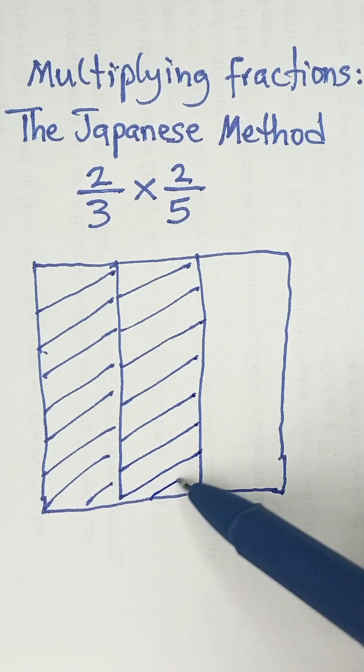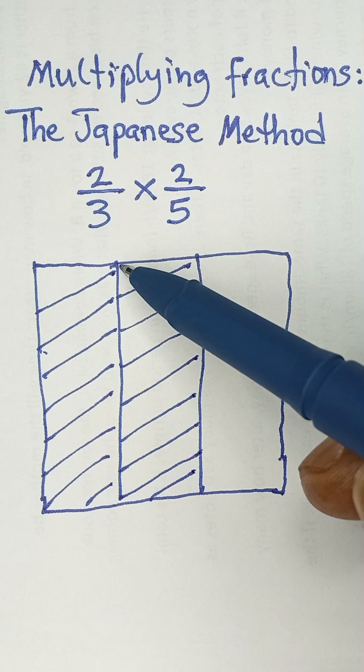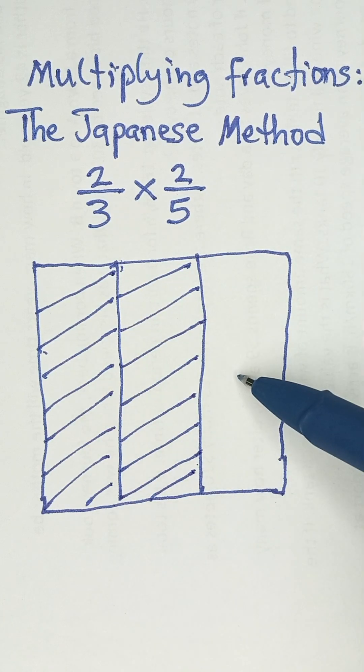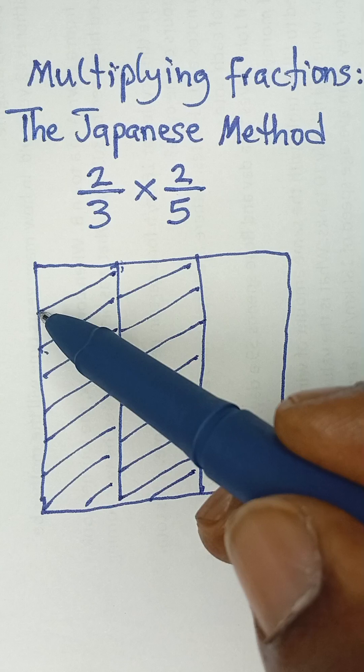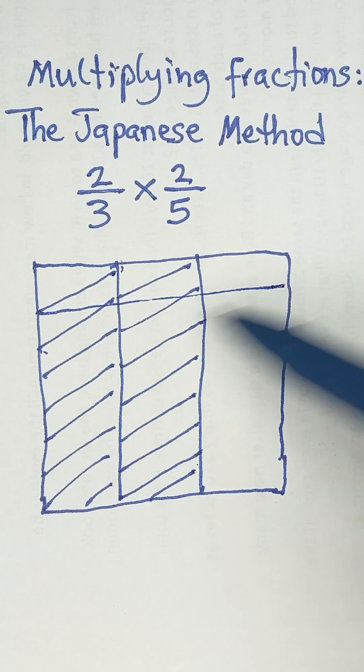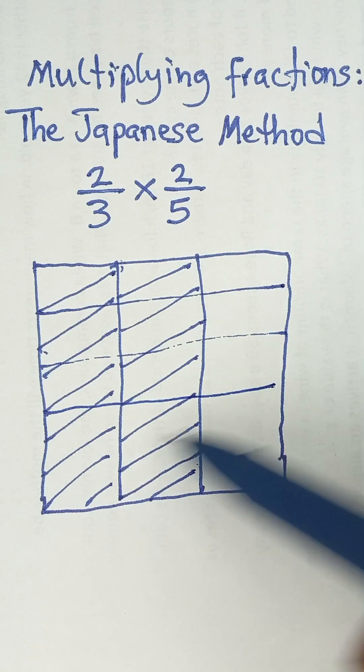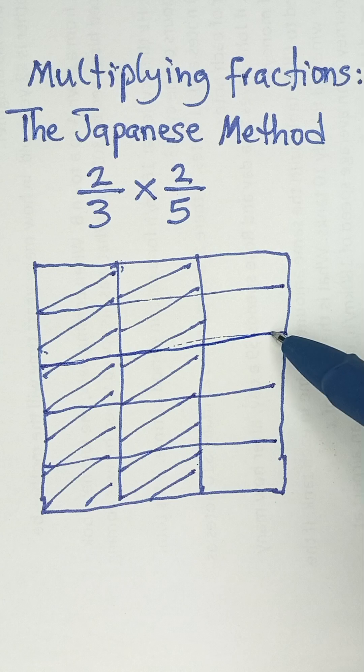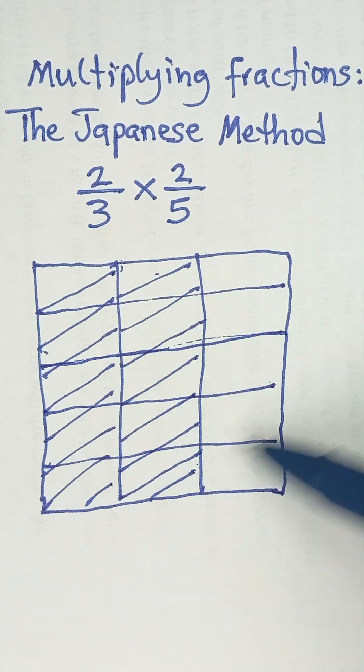Now the next thing to do is go to the next number, 5. We have used vertical lines to divide into three parts. Now I'm going to use horizontal lines to divide this box into five parts because of this 5 here. So I divide into five parts: one, two, three, four, and then five.